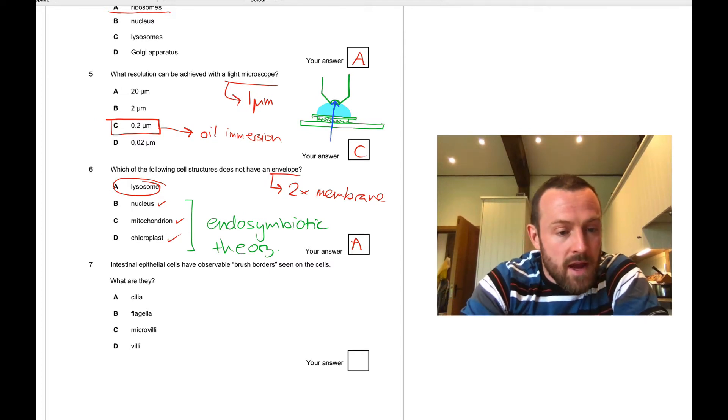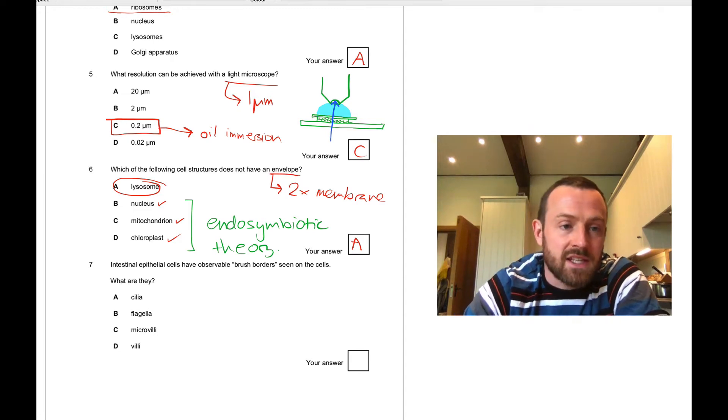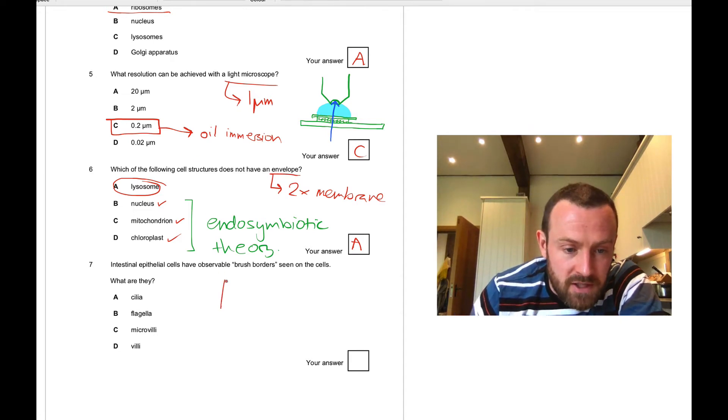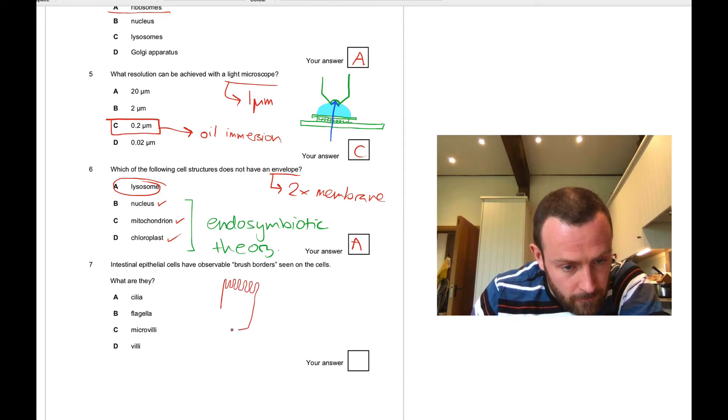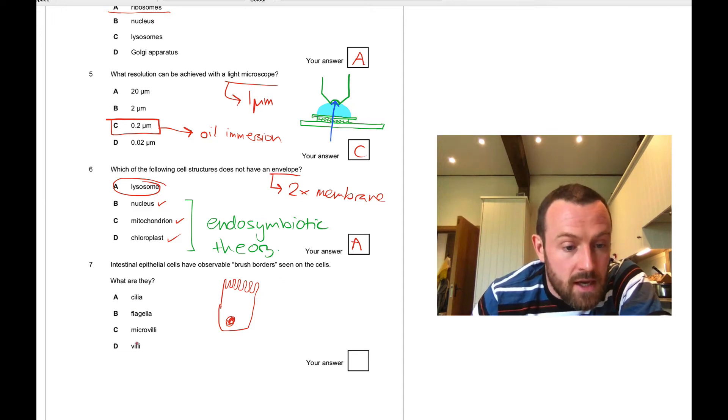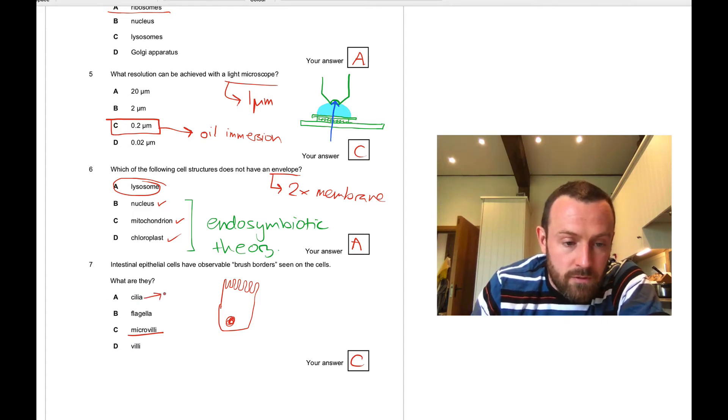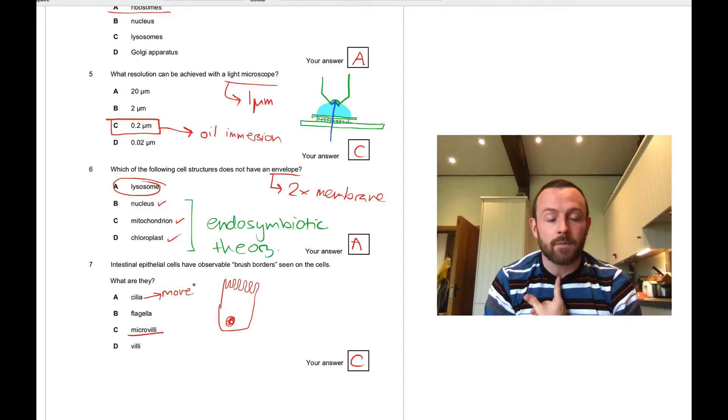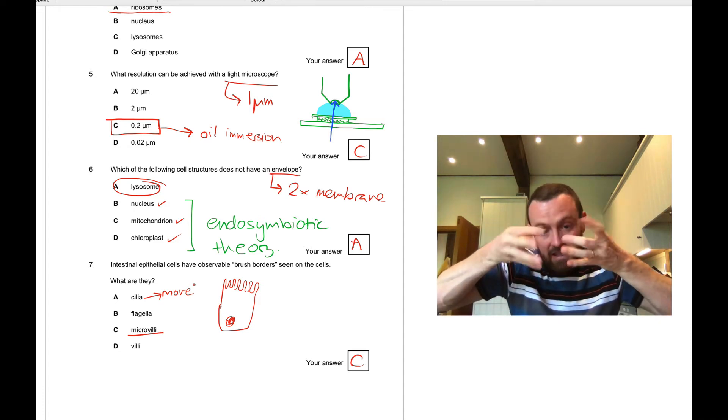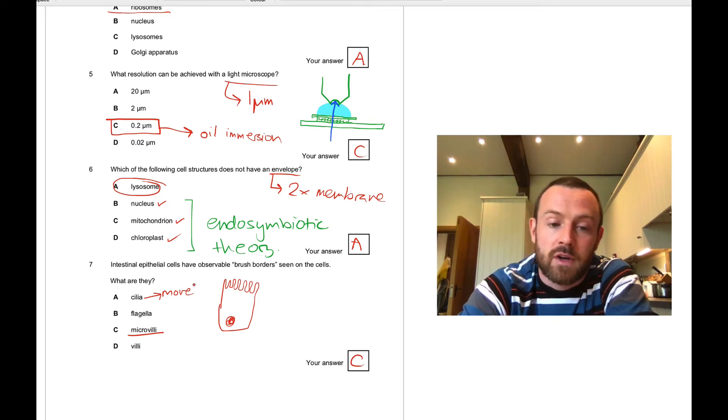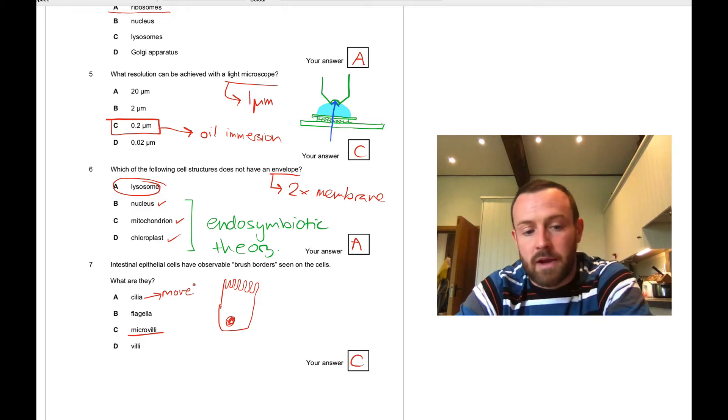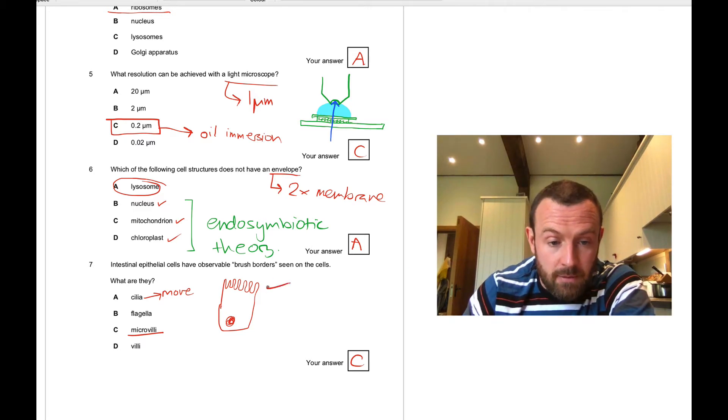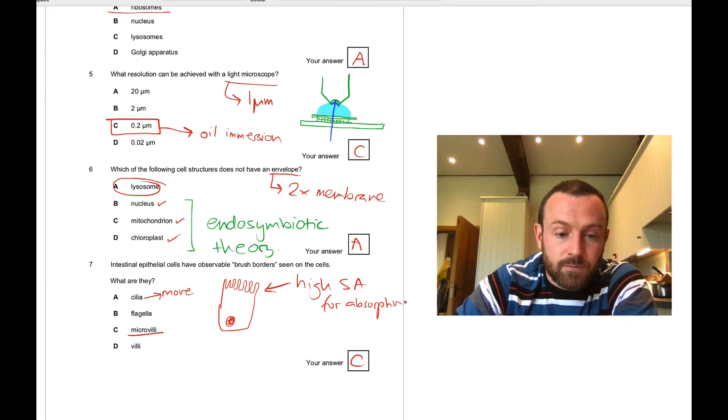Question seven: intestinal epithelial cells have an observable brush border. What is this brush border? If you were to draw an epithelial cell, it kind of looked a bit like this—it's got a brush border like that. What is it? Well, this brush border is microvilli. The answer is C. Now you might have been tempted by A, cilia. Cilia can move, so they are found in cells which need to move something. For example, in your trachea, you've got ciliated cells that move mucus up and they beat like this. They carry the mucus up and out. You also find them in the oviduct where they help to move an egg along the fallopian tube. But these ones, microvilli, are really just about increasing the surface area for absorption of food products.